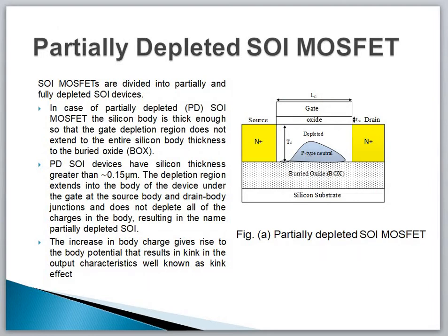First, we will talk about the partial depleted SOI MOSFET. SOI MOSFETs are divided into two types: PD (partial depleted) and fully depleted devices. In partial depleted SOI MOSFETs, the silicon body is thick enough so that the gate depletion region does not extend through the entire silicon body thickness to the buried oxide — there is some portion left between them. Partial depleted SOI devices have a silicon thickness greater than 0.15 micrometers. The depletion region extends into the body under the gate at the source-body and drain-body junctions and does not deplete all the charges in the body, which is why it is called a partial depleted MOSFET.